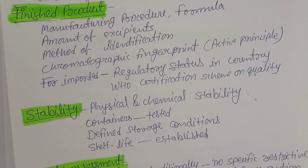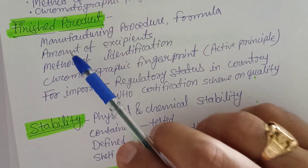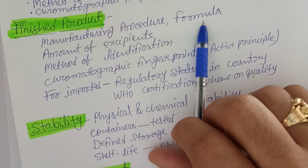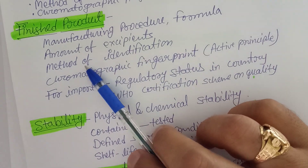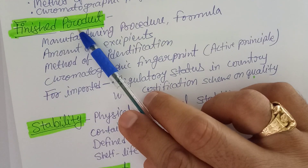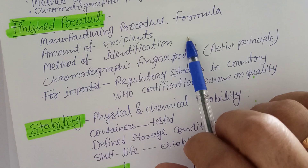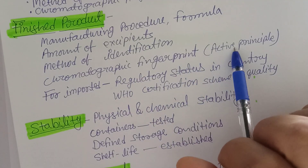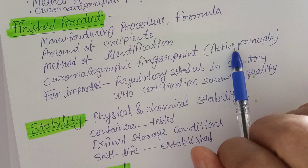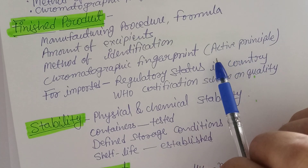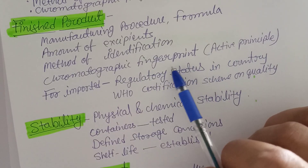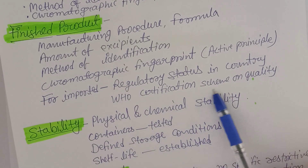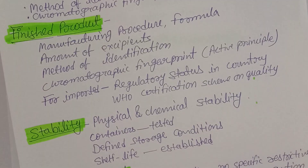For finished products such as tablets, capsules, ointments, or creams, the manufacturing procedure must be given, including the formula and quantity of excipients used. Methods of identification — whether chromatographic, spectroscopic, or preliminary tests — and chromatographic fingerprints for the active principle must be provided. For example, morphine from opium latex should be characterized by its functional groups. For imported products, the regulatory status and WHO certification scheme on quality must also be revealed.